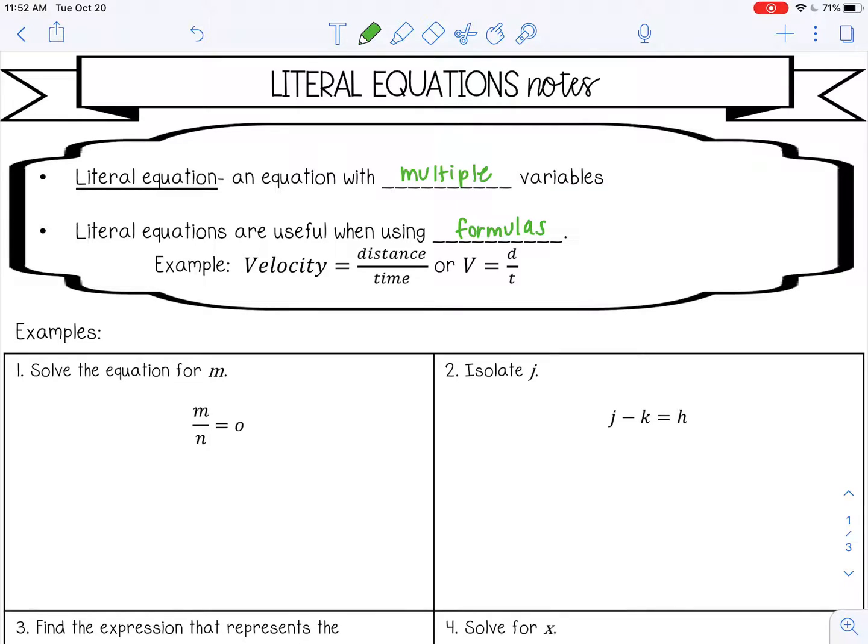For example, velocity equals distance over time. So you have three different variables here, and you may want to rearrange that formula so that you can work with it or find a distinct part of it.